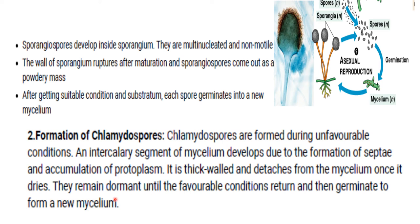The thick-walled septa detach from the mycelium once dried. Under unfavorable conditions, the chlamydospore remains dormant for a long period until favorable conditions return, then germinates to form a new mycelium.